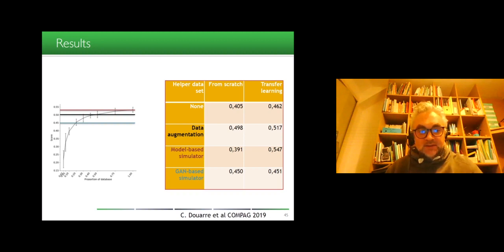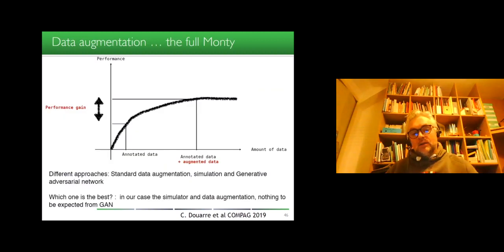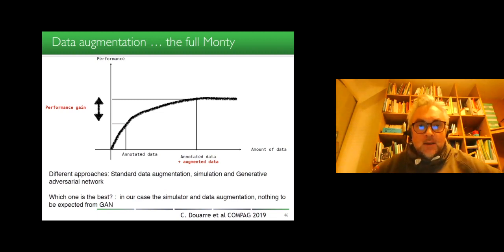The data augmentation produced a pretty nice result also, up to 50% of data set performance. And the GAN itself doesn't bring that much of an improvement. So, we have different approaches to produce, to reduce the need of annotation. Standard data augmentation, simulation, and generative adversarial network.